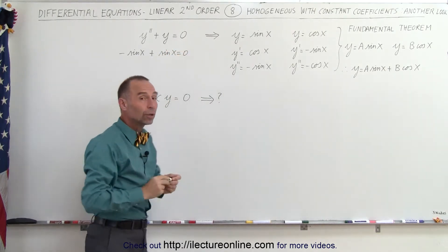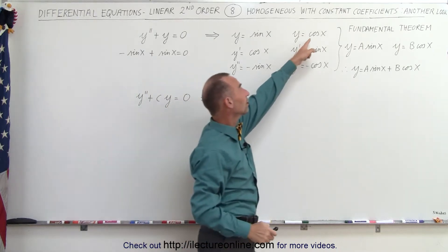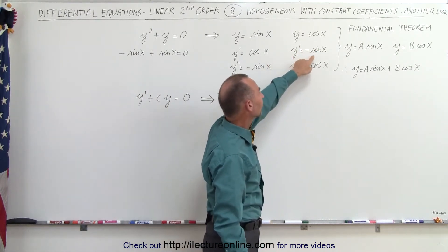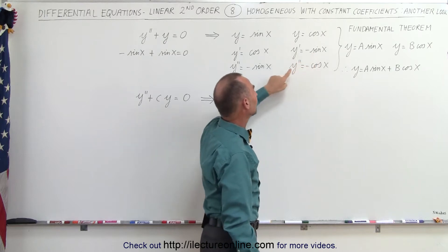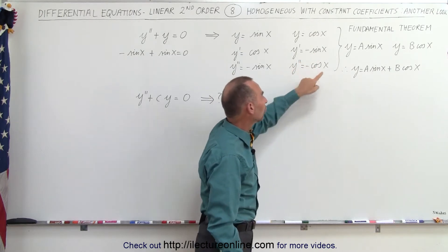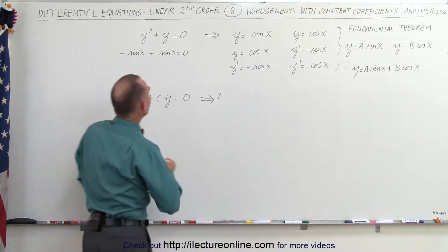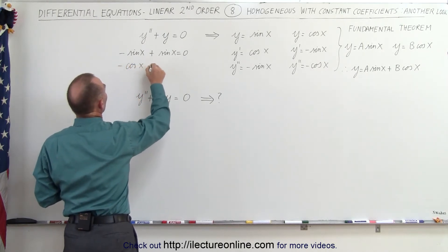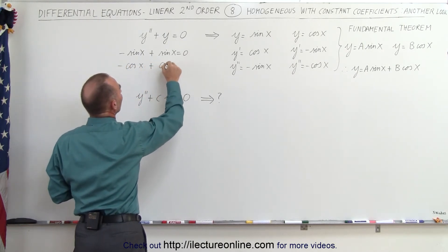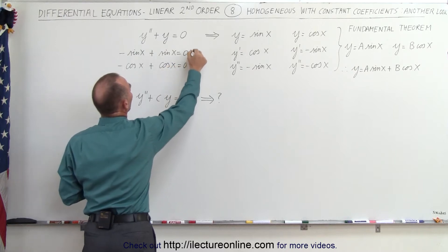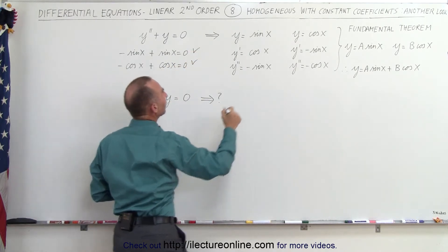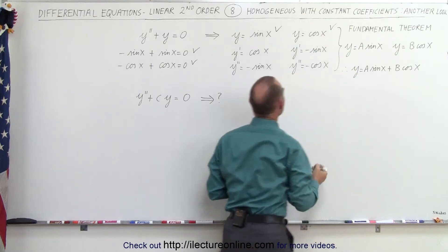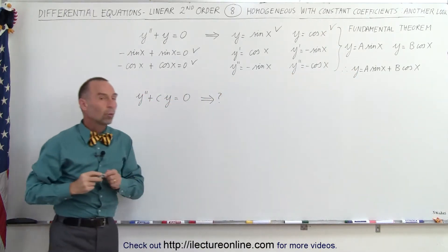Likewise, y equals cosine of x is also a solution. Taking the first derivative gives minus sine of x, and the second derivative gives minus cosine of x. Plugging those in, we get minus cosine of x plus cosine of x, which is equal to zero. Both of these confirm that sine and cosine are indeed solutions to the original differential equation.